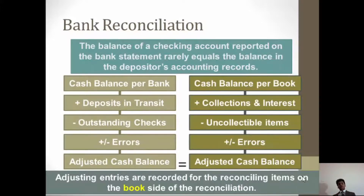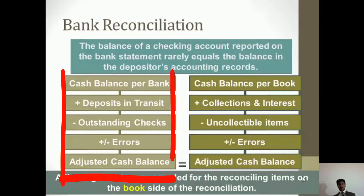Through reconciliation we can identify why that difference occurs. In bank reconciliation there are two parts. First, we look at the cash balance per the bank — what has been reported as the cash balance by the bank statement at a given date, let's say 30th of June.